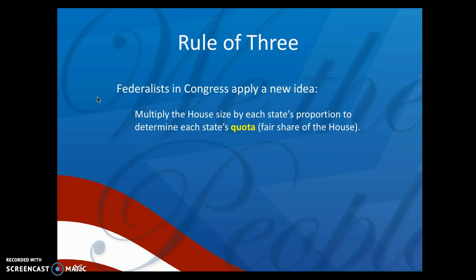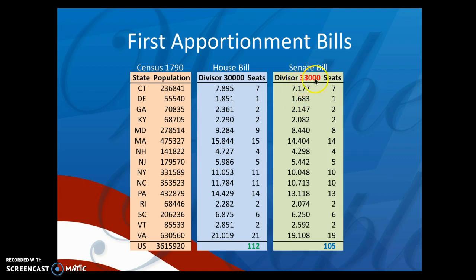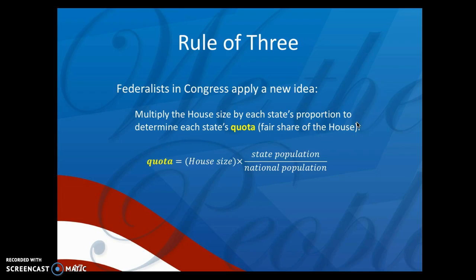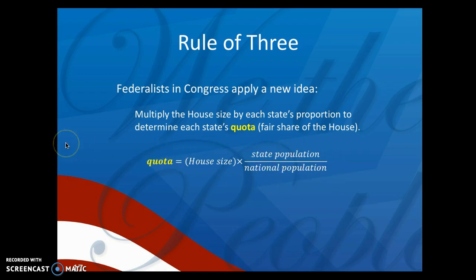At the time, a federalist in Congress applied a new idea. Instead of just dividing by the number of citizens you want each House member to represent, they decided: what if we multiply the house size by each state's population to determine each state's quota? The quota is essentially a fair share of the house: quota = house size × state population / national population. This was called the rule of three — each state gets a fair representation or fair portion of the house.